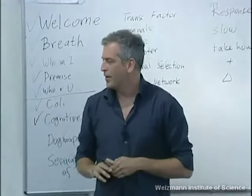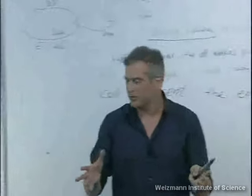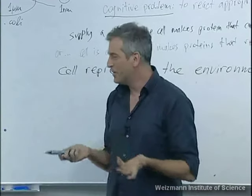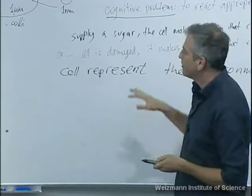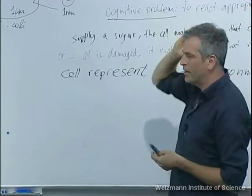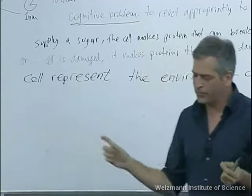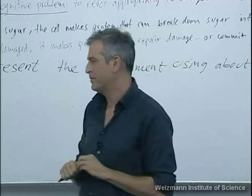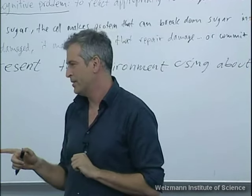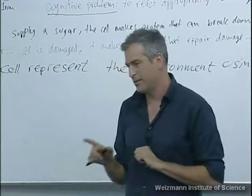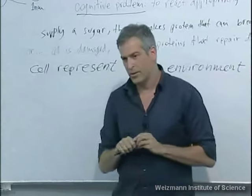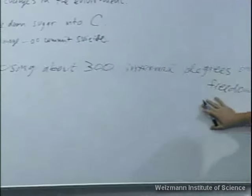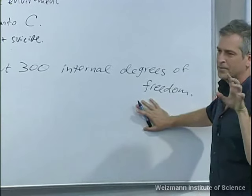Someone asks: how did I come to the number 300? In a second, I'll talk about the molecules called transcription factors. We know from the fully sequenced genome of E. coli every single protein, and we know that about 300 of them are transcription factors. That's the number. The degree of freedom here is the concentration of a particular molecular species — i goes from 1 to 300.